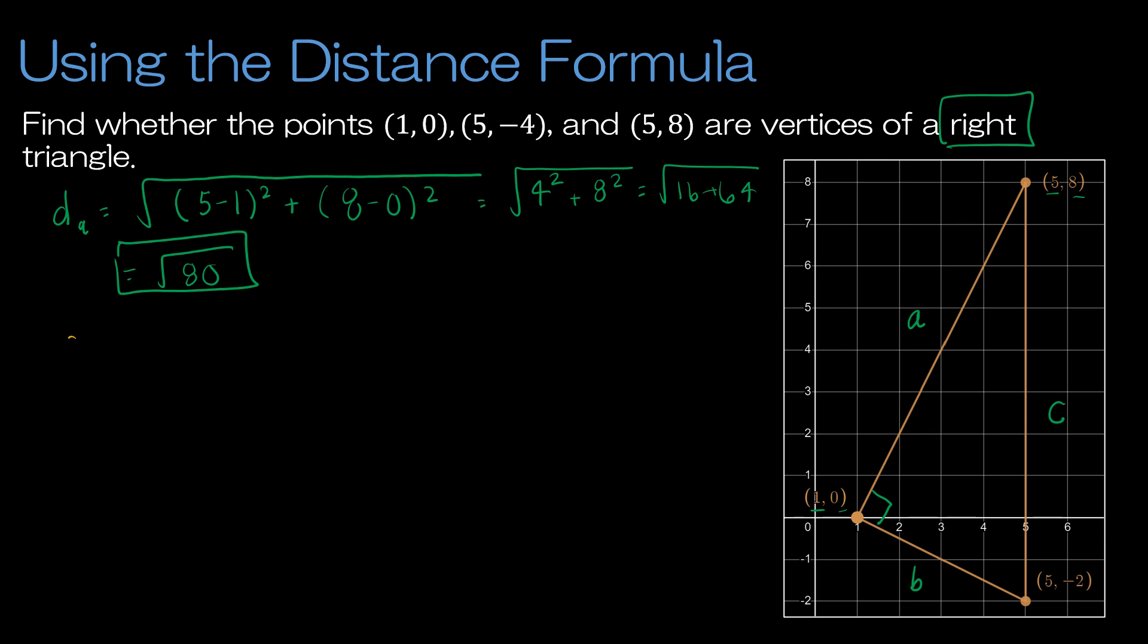Now I'm going to do the same for B. So the distance of B. And B is (1 - 5)² + (0 - (-2))². And that gives me the square root of (-4)² + (2)². And that gives me the square root of 16 plus 4. So that is the square root of 20. And again, I could write this as 2√5. And if you don't know how to do that, that's okay. We'll be working on that. But for now, I'm just going to leave it as √20.